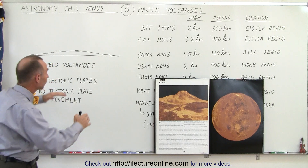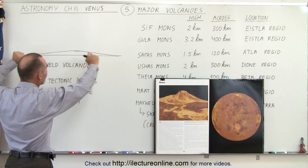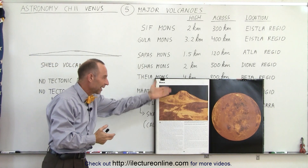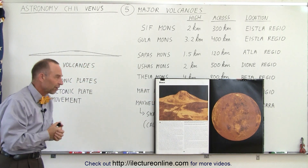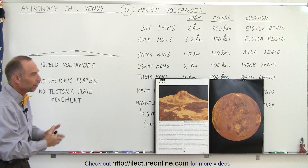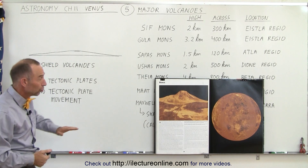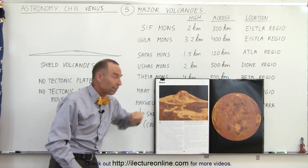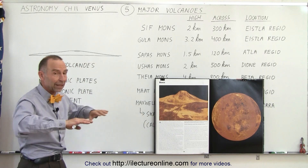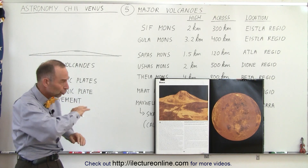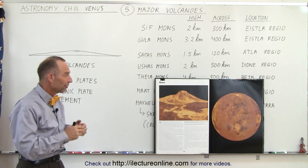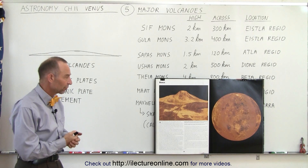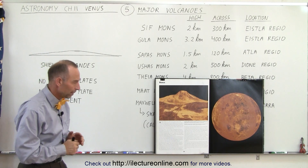Even though the mountains look relatively flat from a distance, we increased or exaggerated the vertical size of the mountain to make it look a little more pleasing. Also notice there are enormous lava fields around these mountains. Over vast areas of the planet, there are indeed indications of huge lava fields where lava flowed over thousands and thousands of kilometers across the surface. We'll take a look at that in a little more detail as well.